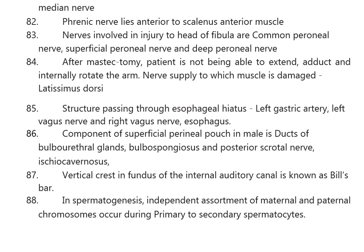Structures passing through the esophageal hiatus are the left gastric artery, left vagus nerve, right vagus nerve, and esophagus. Components of the superficial perineal pouch in the male are the ducts of bulbourethral glands, bulbospongiosus muscle, posterior scrotal nerve, and ischiocavernosus.